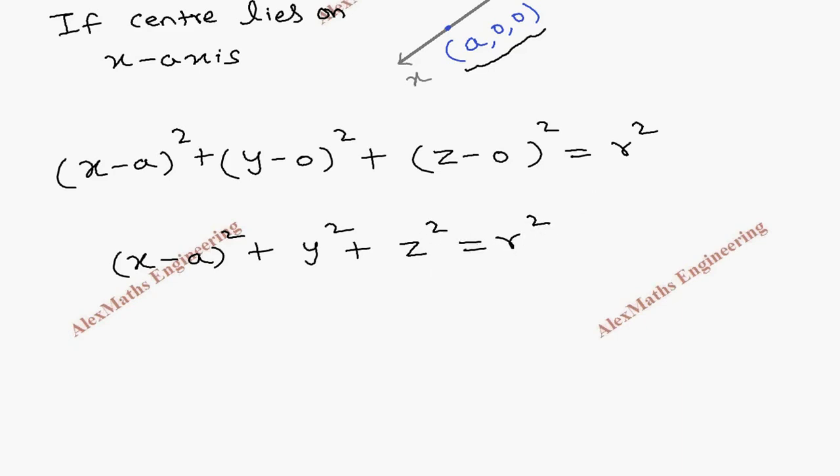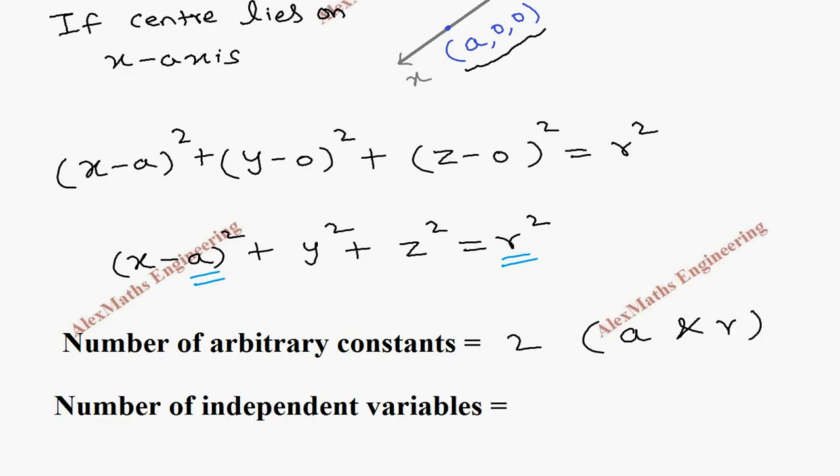Now we notice there are two arbitrary constants, a and r. So the number of arbitrary constants is 2. And the number of independent variables from the given equation is x and y, so those are also 2.